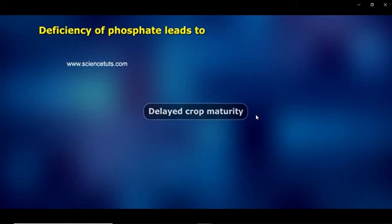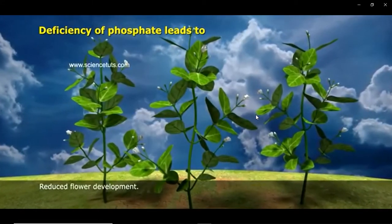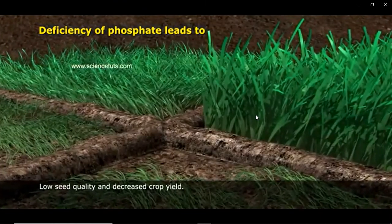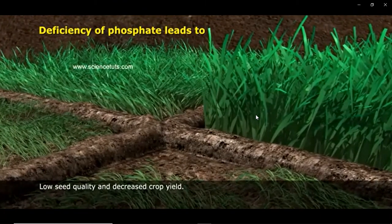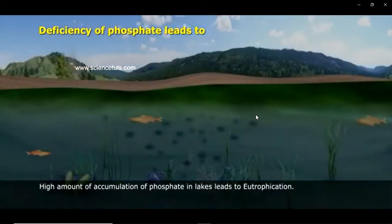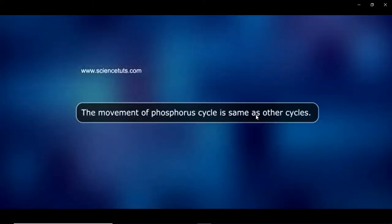If there is deficiency of phosphate, delayed crop maturity would occur, along with reduced flower development, low seed quality, and decreased crop yield. High accumulation of phosphate in lakes leads to eutrophication, which we have already studied.